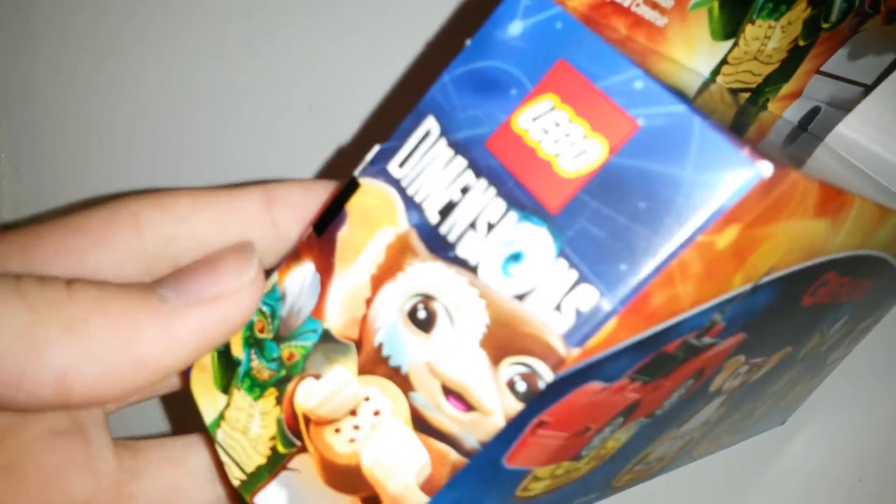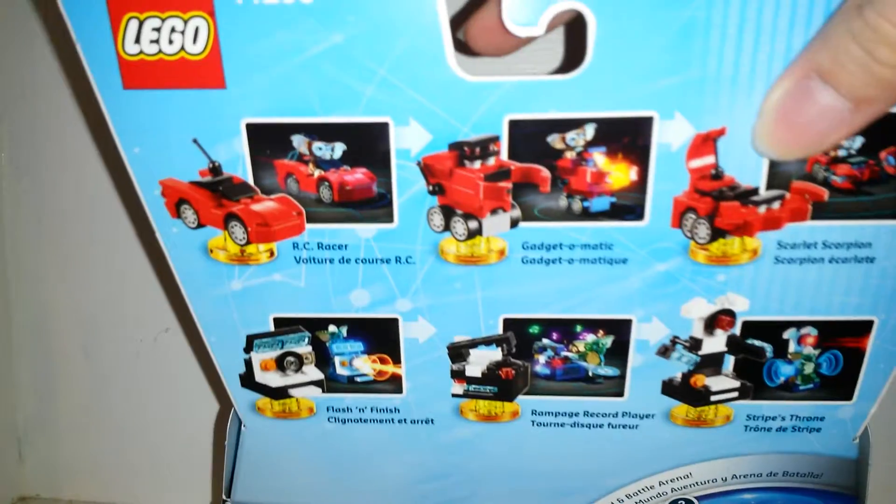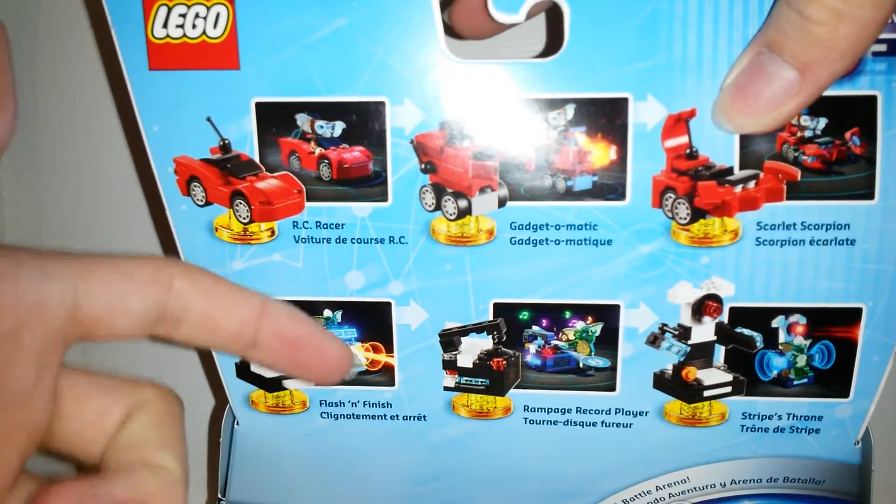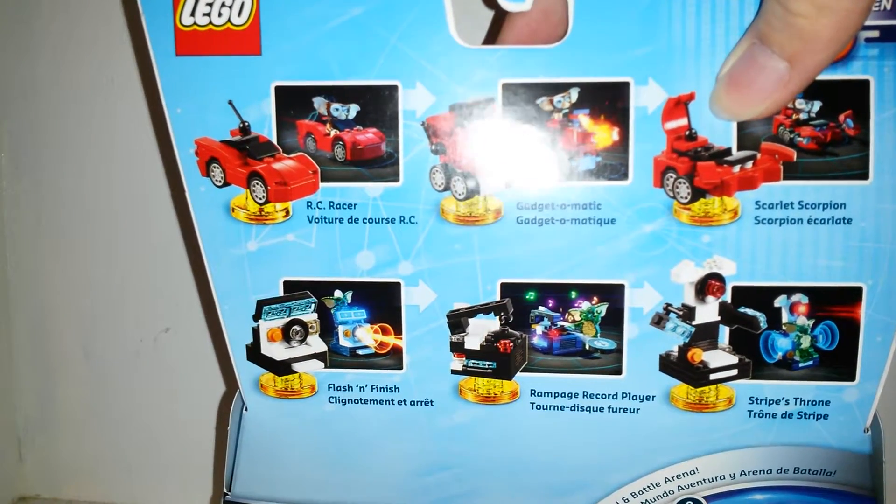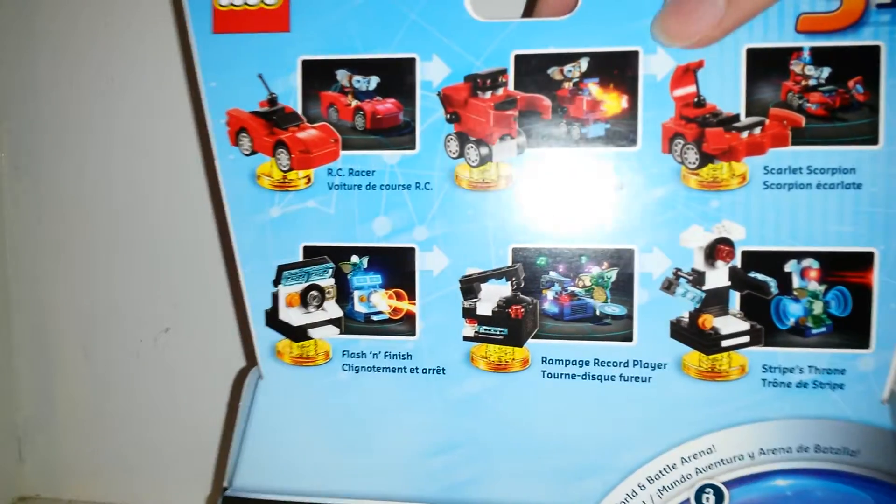On the top we get Gremlins, on the side we get a little picture of Gizmo. Over here we get Dimensions. On the back you can see all the different vehicles you have. Of course, I think these two are the best. The record player is still a nice choice, but probably wouldn't use it.